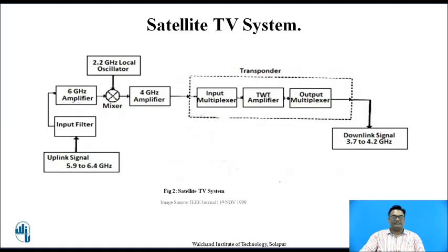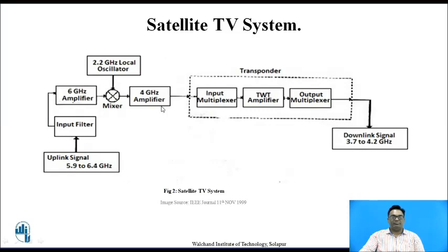The satellite TV system generally consists of the following blocks. This is the block diagram for a satellite television system. The uplink signal is of 5.9 to 6.4 GHz and consists of the main information. This is given to the input filter, then to the 6 GHz amplifier where power amplification takes place, and then to the mixer where it is mixed with the 2.2 GHz local oscillator frequency, which acts as the carrier frequency. Here the process of modulation takes place, and then it is given to the 4 GHz amplifier where again power amplification takes place, and then it is given to the transponder.